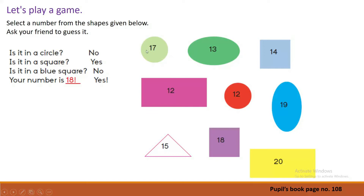We can see number 17 in a light green circle. Then number 13 is in a dark green oval. 14 is in a light blue square. 12 is in a rectangle — it is pink. Number 12 is in a circle, it is orange. Number 19 is in an oval, it is dark blue. Number 15 is in a triangle, it is white. Number 18 is in a purple square. Number 20 is in a yellow rectangle.